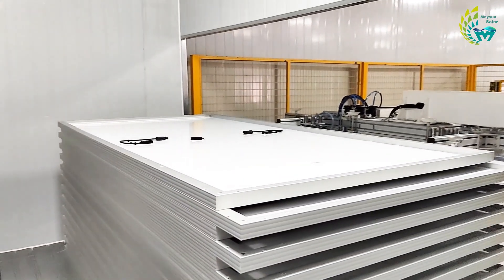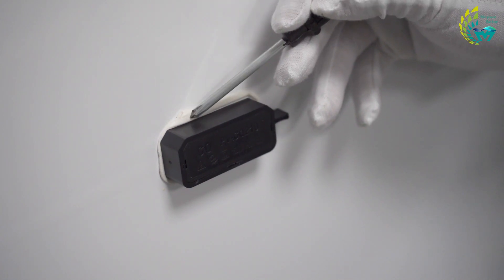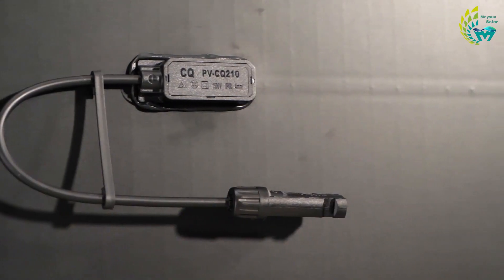After curing, the glue can form a continuous sealing high-strength elastic adhesive layer, which not only can well achieve the requirements of buffering, bonding and sealing, but also can greatly improve the bearing capacity and resistance to deformation of PV modules.